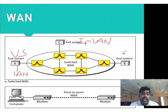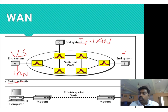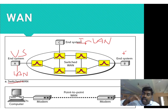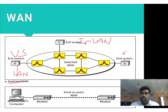This is called a switched WAN and a point-to-point WAN. In a point-to-point WAN, your system is connected to the internet — for example, in the workplace, you can transfer data worldwide. In LAN, you can share a printer, a scanner, and other devices among systems.